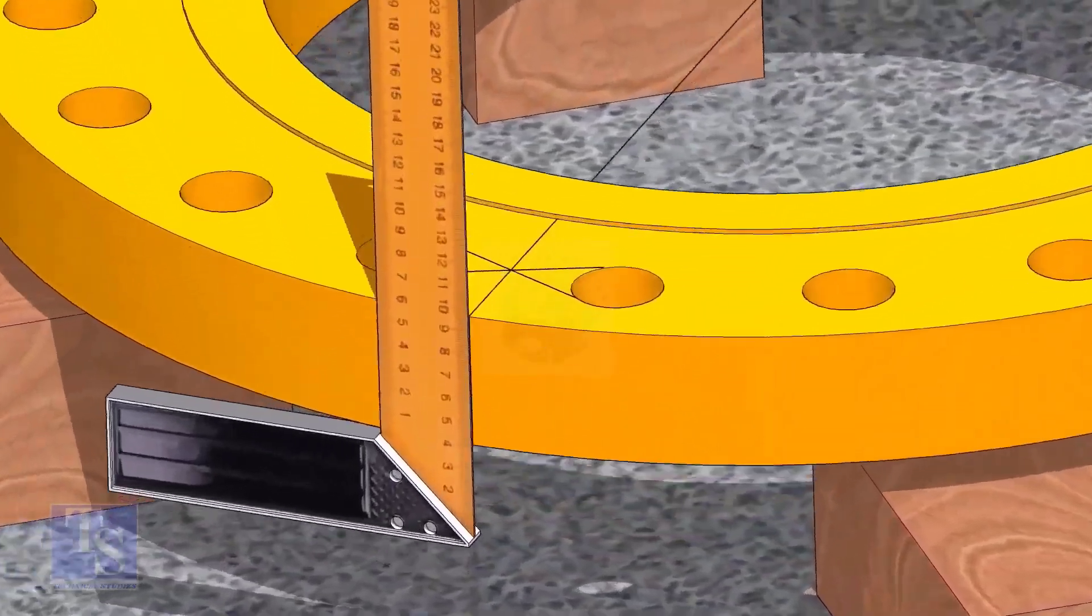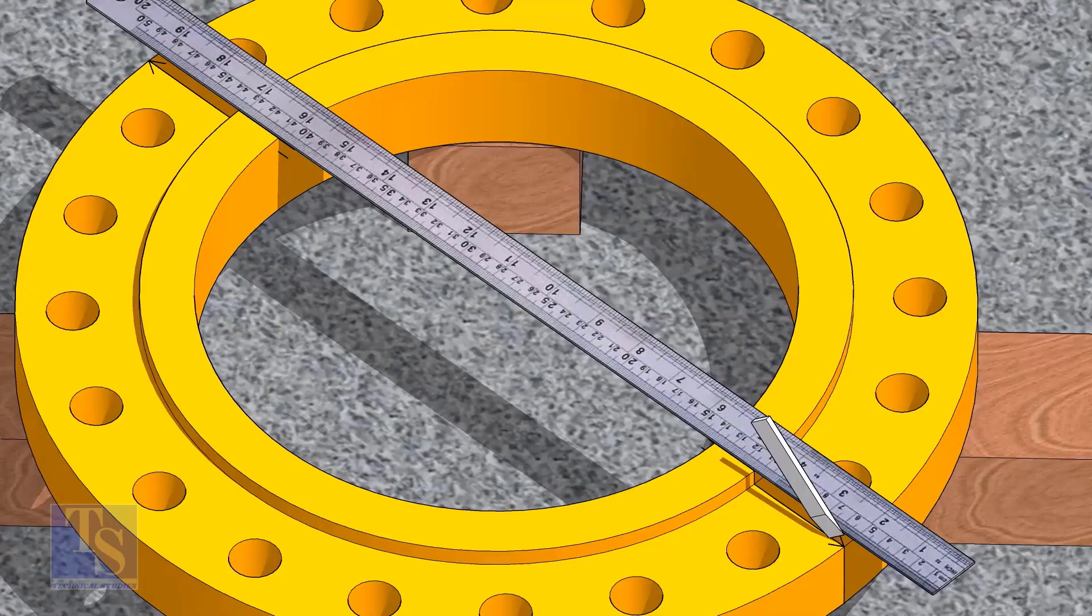Now, transfer the center line to the sides of the flange. Overturn the flange and transfer the center line on the back side of the flange.